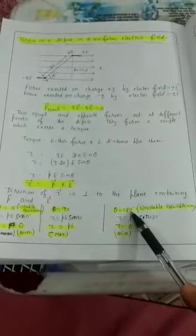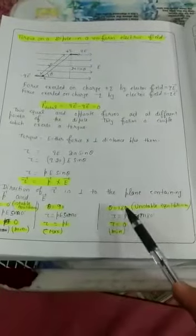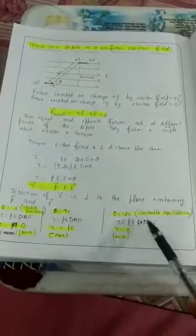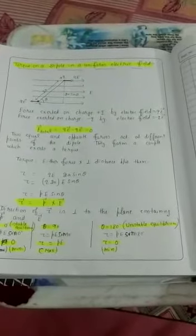When theta is 180 degrees, this is the condition of unstable equilibrium — the direction of the dipole moment is opposite to the direction of the electric field. In this case, torque is again 0 because sine 180 equals 0. So, theta = 0° means stable equilibrium, theta = 180° means unstable equilibrium, and the torque is maximum when theta is 90°, when the dipole direction is perpendicular to the electric field.